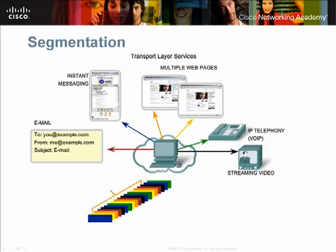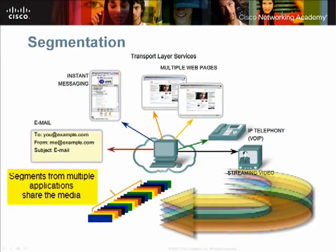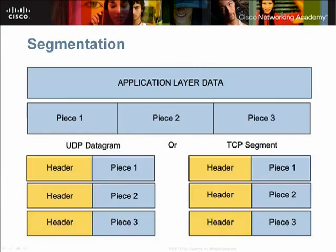In this graphic, the user is working with many applications simultaneously. These include email, instant messaging, multiple web pages, IP telephony, and streaming video. Each type of traffic is represented by a different colored arrow. The transport layer maintains these communication streams by dividing the application's data into small parts called segments and interleaving these segments across the network media.